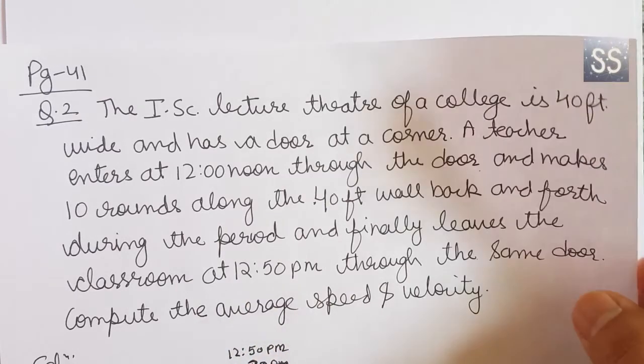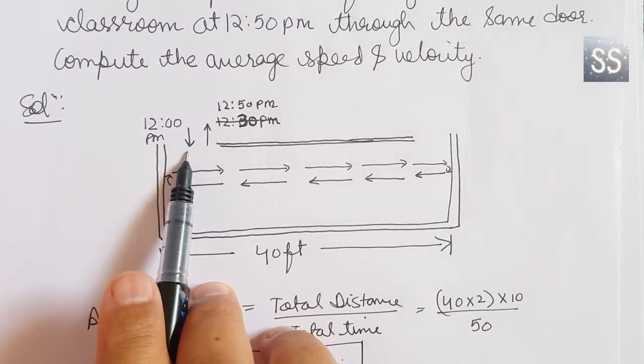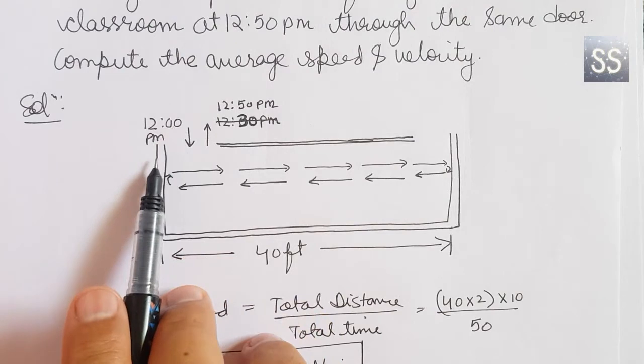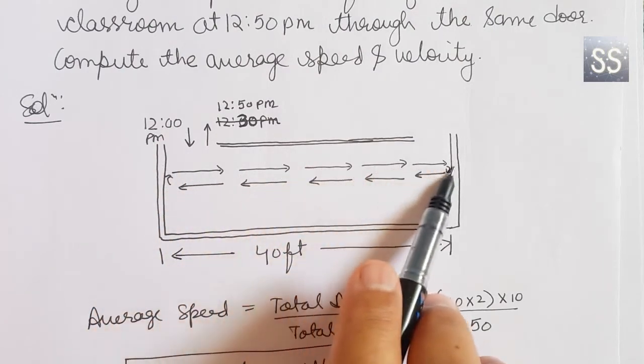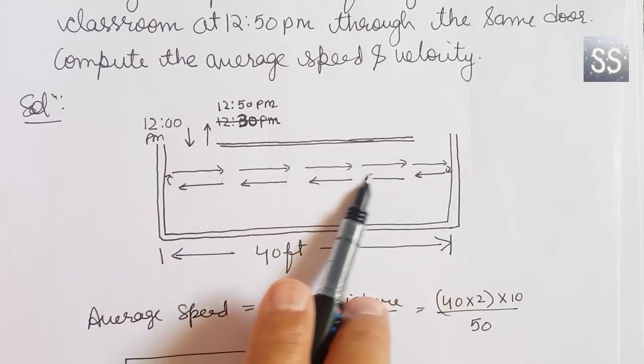First of all, we do mapping. Here, the teacher enters at 12 pm, then after 1 round. So in 1 round, how much travel is done? This is gone and returned. So in 1 round, it will be 80 feet.